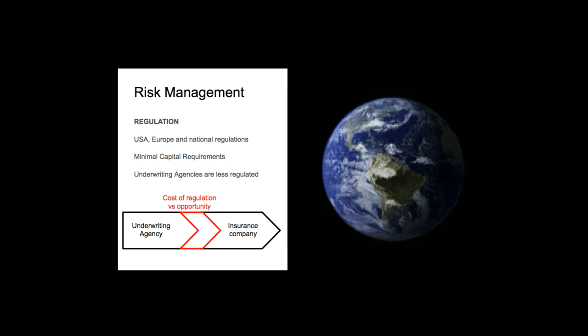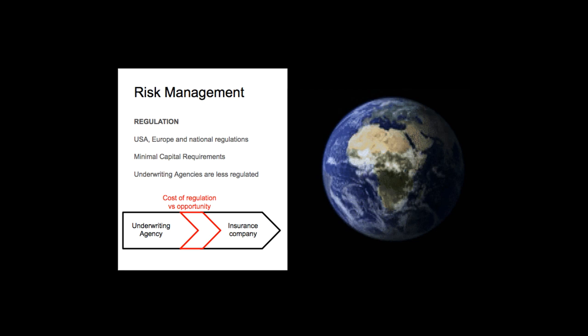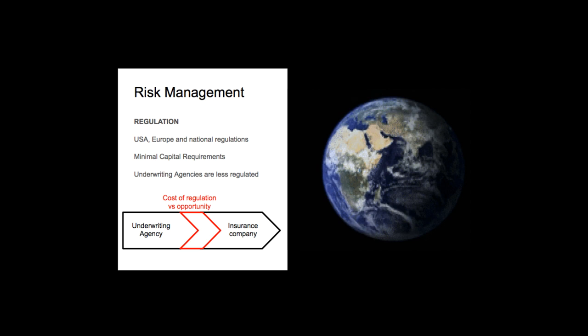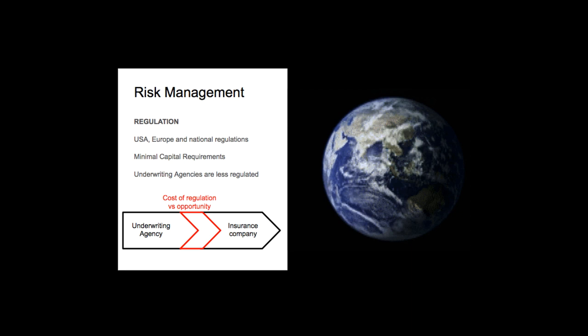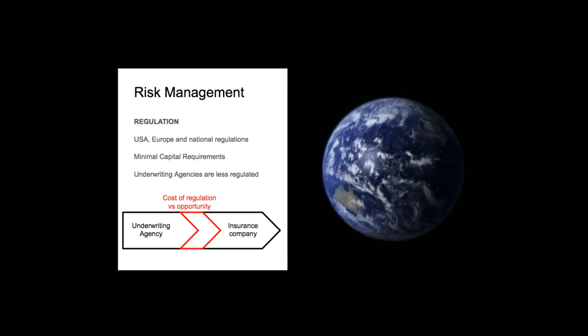In Europe, for example, Solvency 2 requires a minimal capital requirement of 1.6 million euros. The amount reaches 25 million in China. To avoid investing too much in compliance, we will start off as an underwriting agency. Phoenix will focus on writing good business and transfer the risk to an insurer. This leads to a commission-based revenue. Once a regulatory zone seems mature enough and we have the funds to ensure requirements, we can pursue an insurance license.